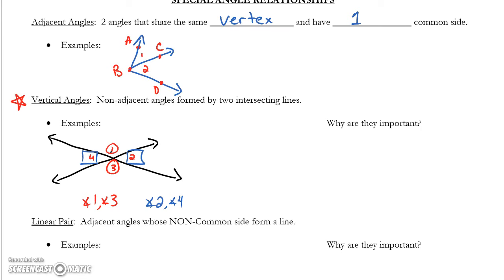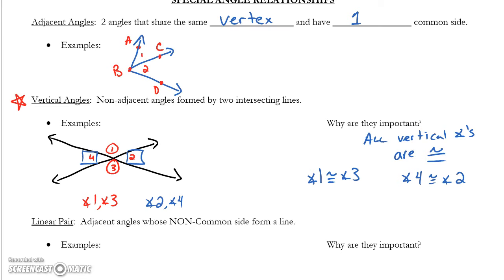Why are vertical angles important? Mostly because all vertical angles are congruent. That means they have equal measure. So, in this example, we'd say that angle 1 is congruent to angle 3 and angle 4 is congruent to angle 2. In a minute we'll look at some examples of that.